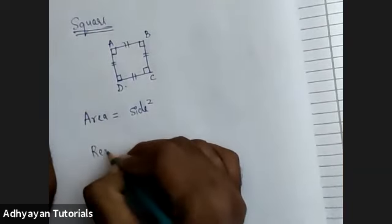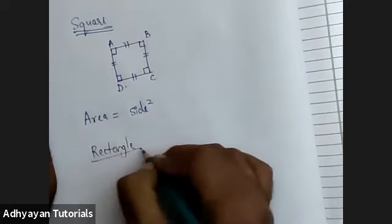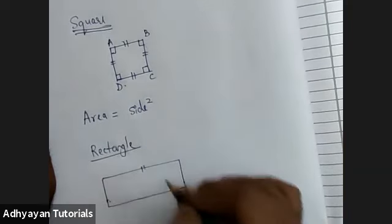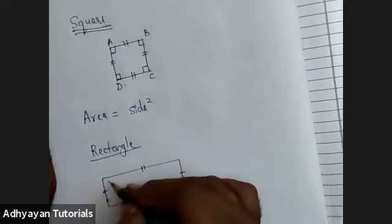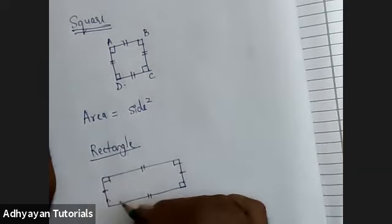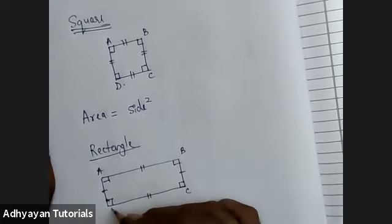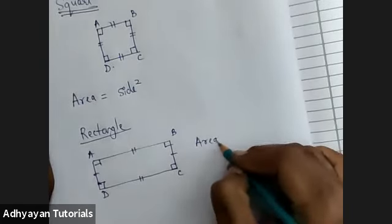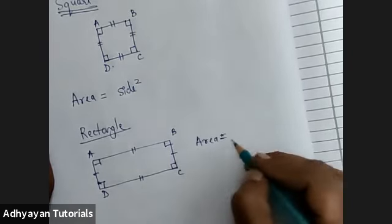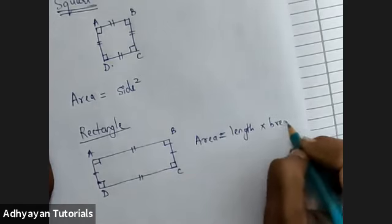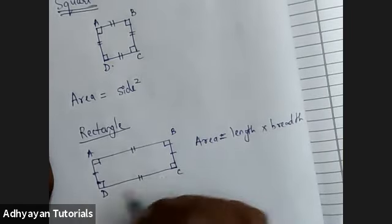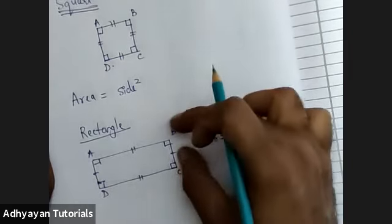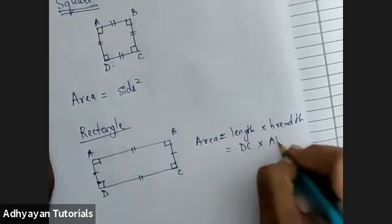Next is rectangle. In a rectangle, opposite sides are equal — all sides are not equal, these two are equal and those two are equal — and all angles are 90 degrees. Area of a rectangle is length into breadth. The length here is the bigger value, which is DC or AB, because both have the same value, and the breadth is the smaller value, such as AD.